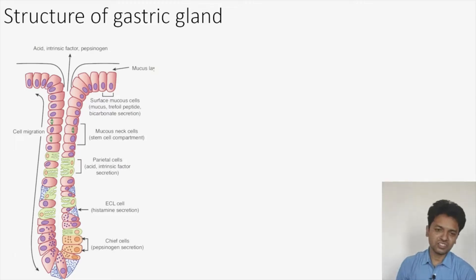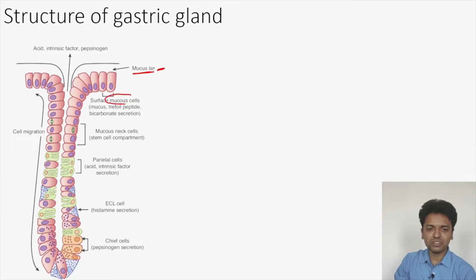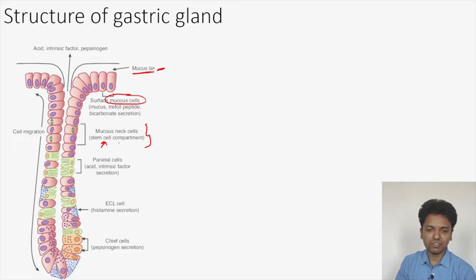So what is the structure of the gastric gland? The gastric gland is covered by a mucus layer, which is secreted by the surface mucus cells. Underneath the surface mucus cells we have the mucus neck cell, which belongs to the stem cell compartment.